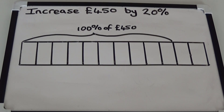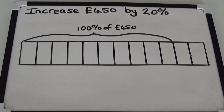To solve this we first need to calculate what 20% of £450 is. We're going to start by calculating 10% of £450. 450 divided by 10 is 45, so 10% of £450 is £45.